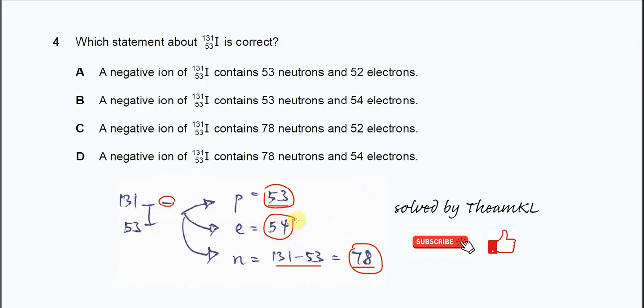So the answer is very clear. We know that it's 78 neutrons and 54 electrons. So answer therefore is D. Okay, that's all. Thank you.